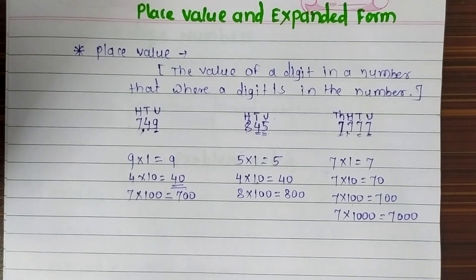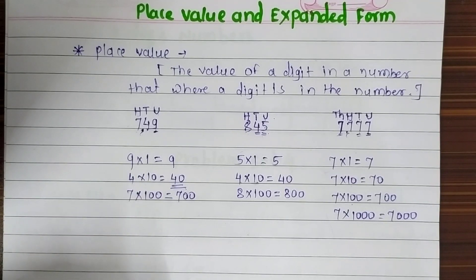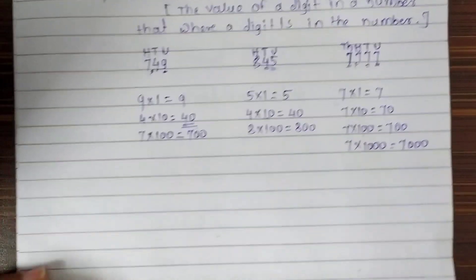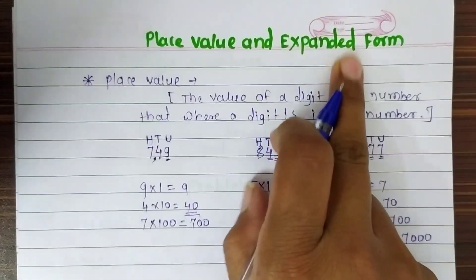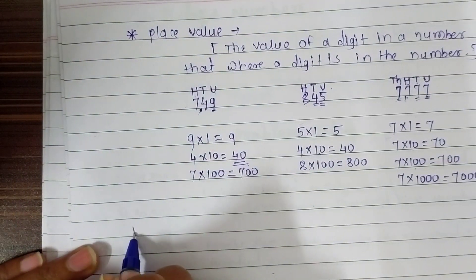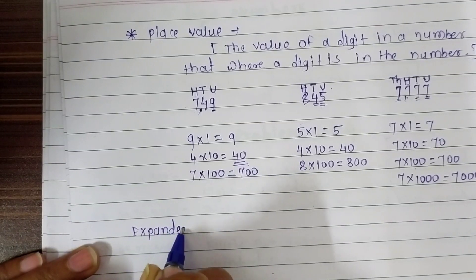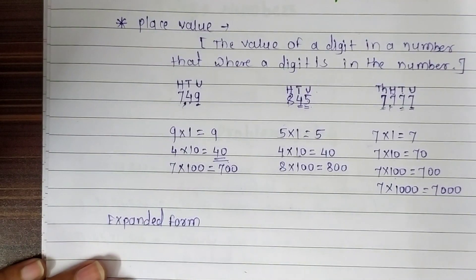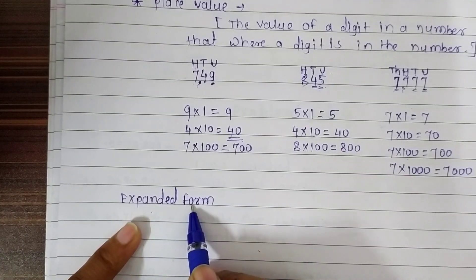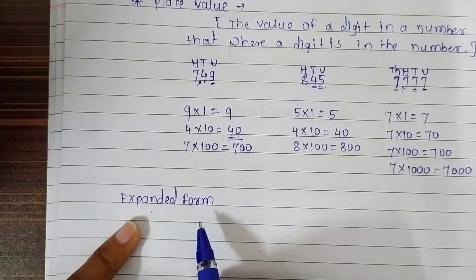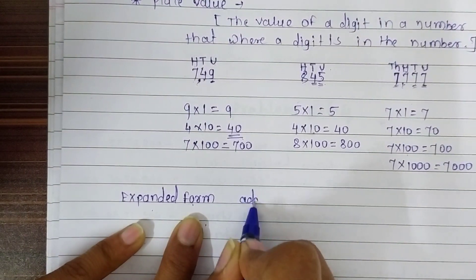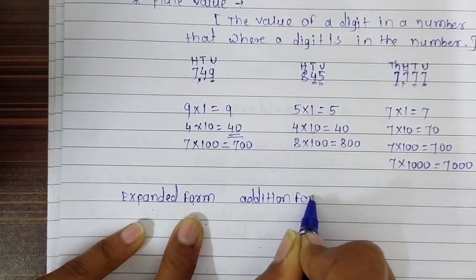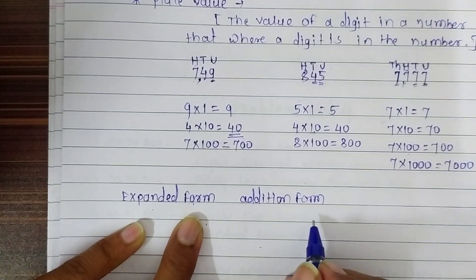I hope you understand about place value. To find the place value of a digit, we must know in which place the digit is — remember that. Now let's turn towards expanded form. When we write the place value of each digit in addition form, we get the expanded form of that number.